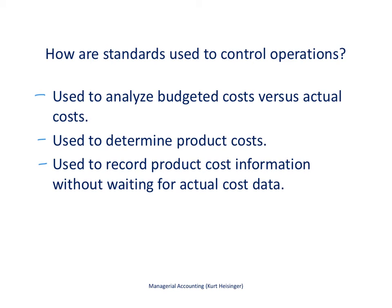How do we use these standards to control operations? We use them for planning purposes, but we also look back in time and analyze our budgeted costs against what actually happened — evaluating differences between, for example, what we expected to pay employees versus what we actually paid, or what we expected to use in direct materials versus what we actually used. We also use actual cost information after the fact to help determine what our product costs will be in the future, making this an evolving process.